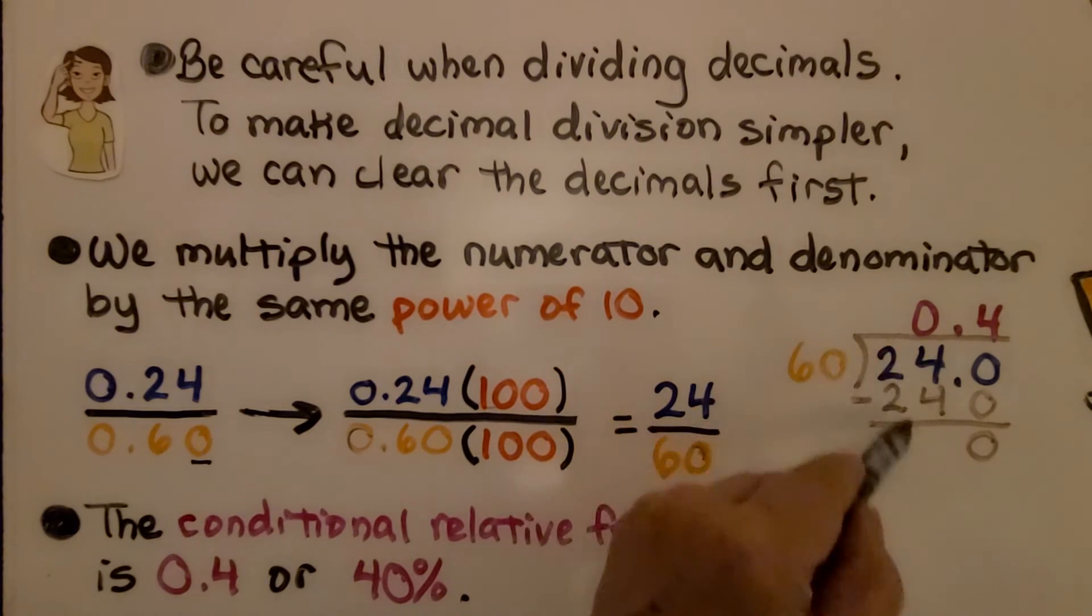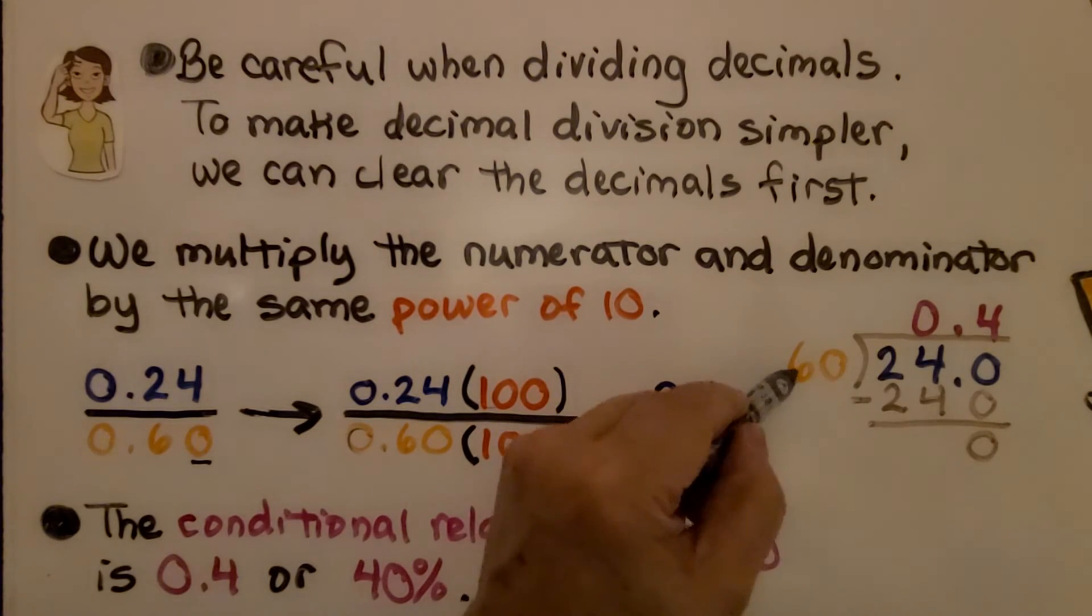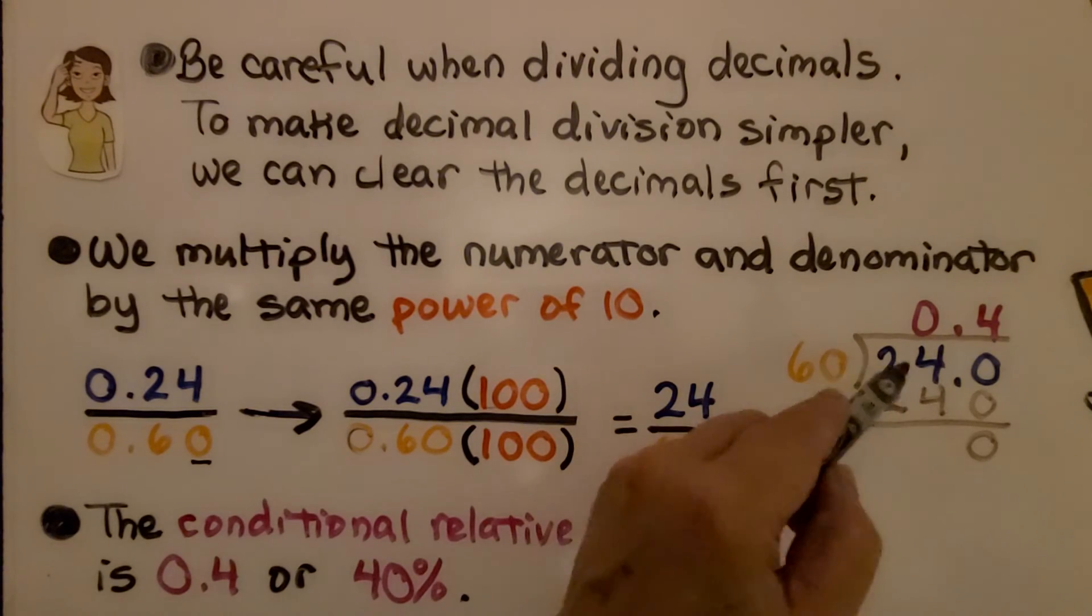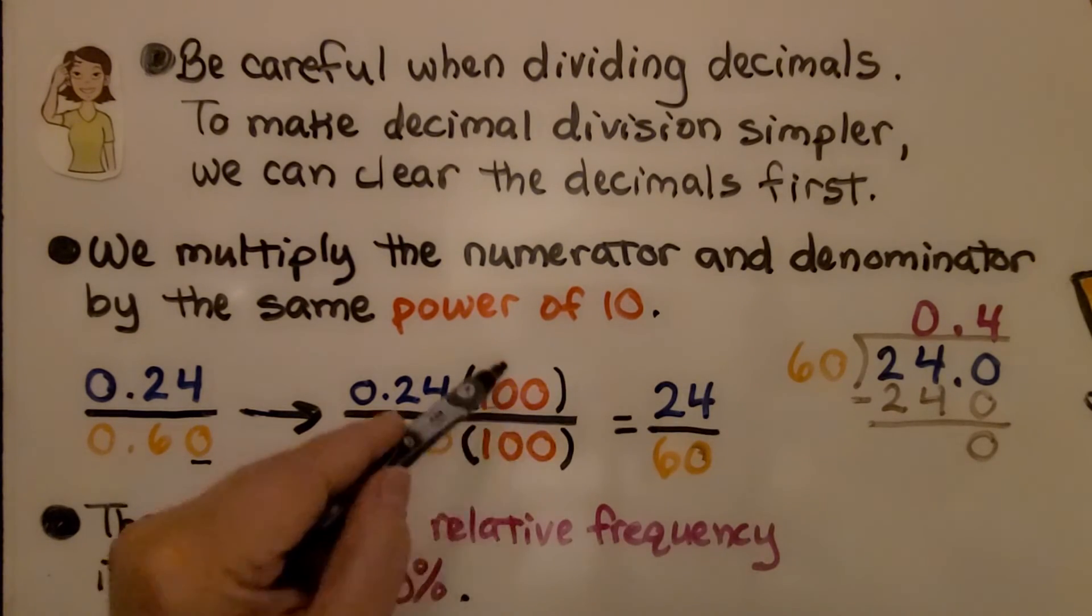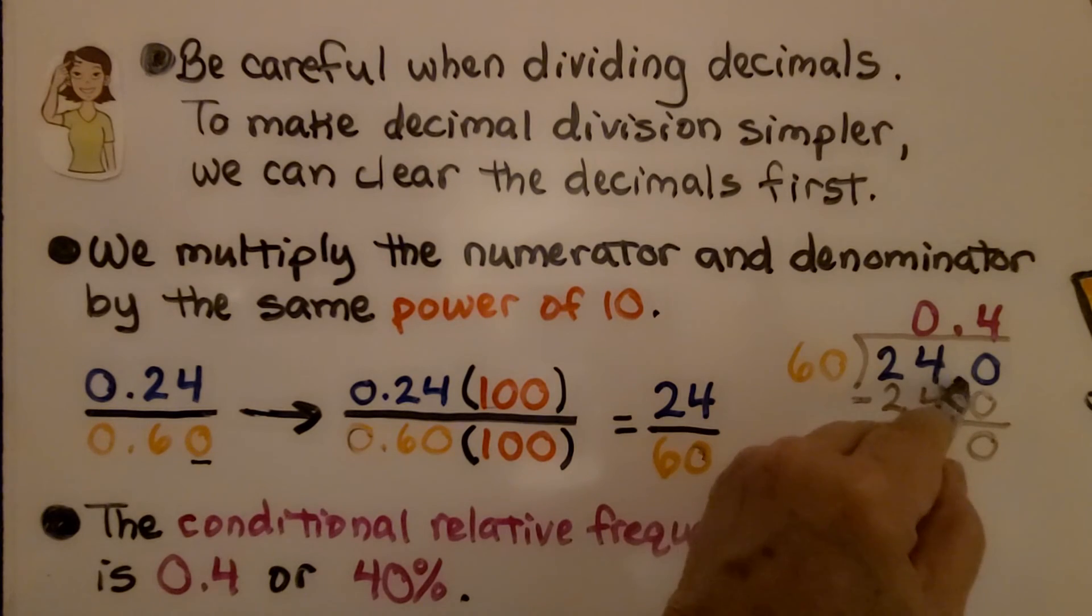The conditional relative frequency is 0.4 or four tenths or 40 hundredths or 40 percent. We don't have to divide decimals now. We can just do it as whole numbers for the dividend and the divisor